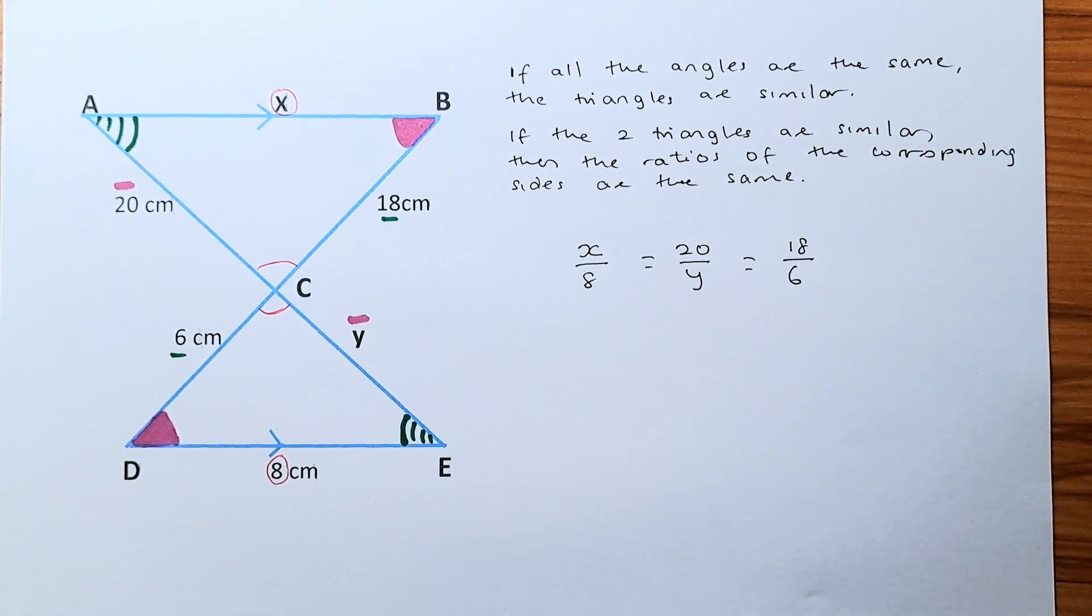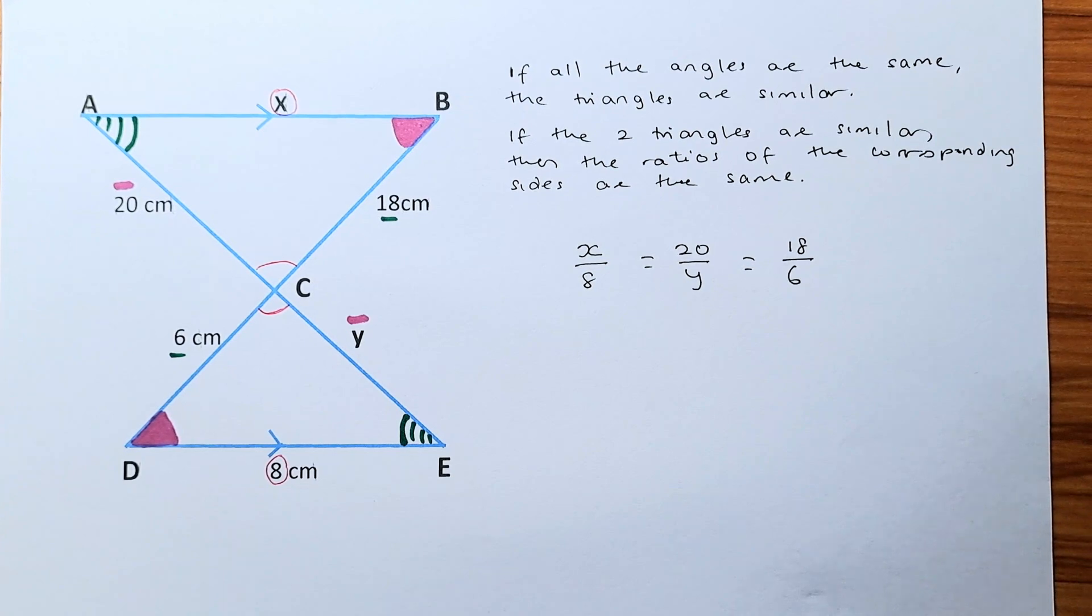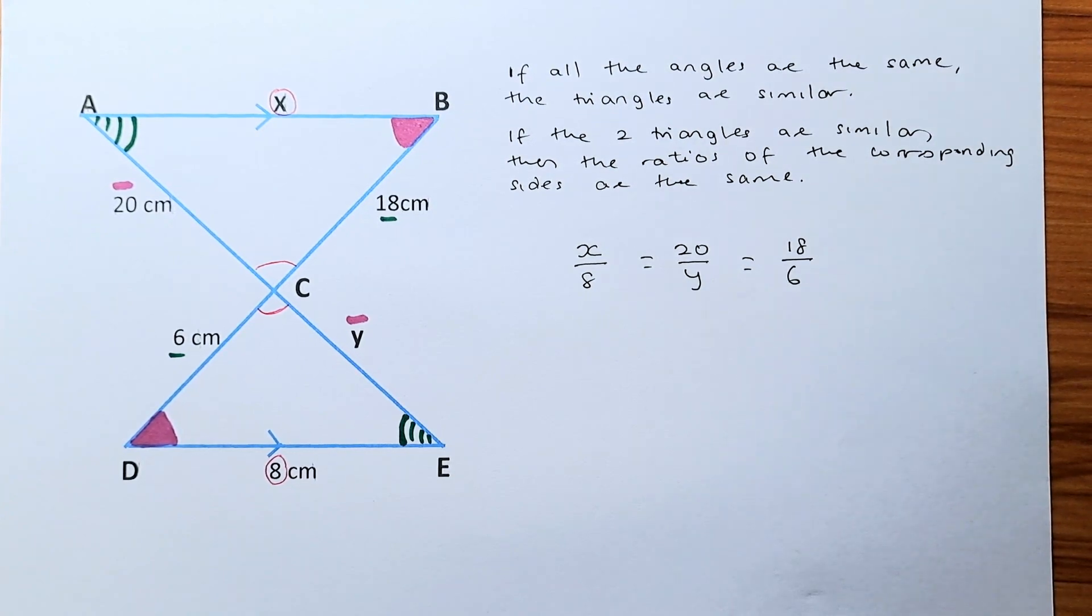In front of us there are two similar triangles, ABC and CDE. So how do we know they are similar?